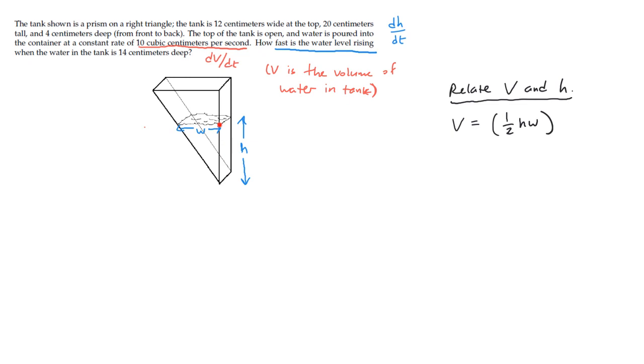And then to get the volume, we multiply that area by how deep this prism is. So that's going to be one-half hw times four centimeters, because that is the constant depth of the prism. So that comes out to 2hw. That's V.